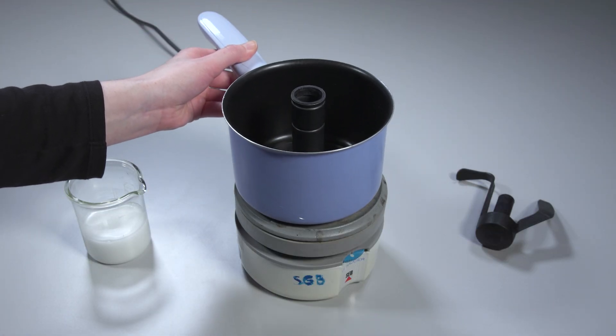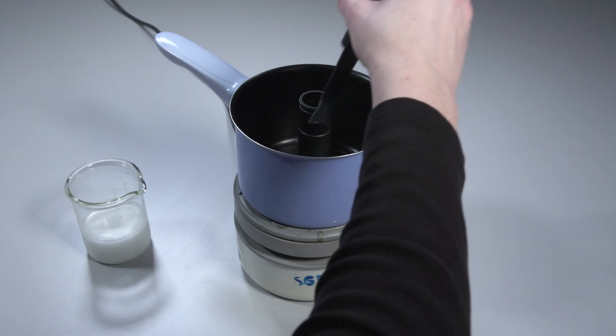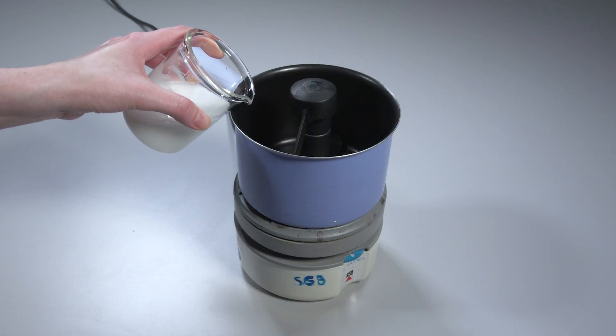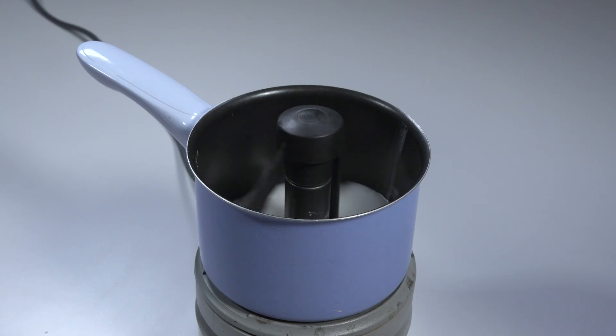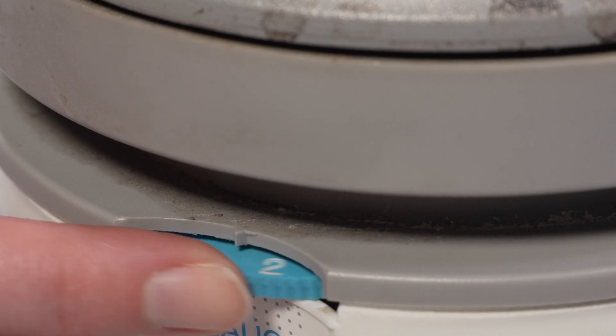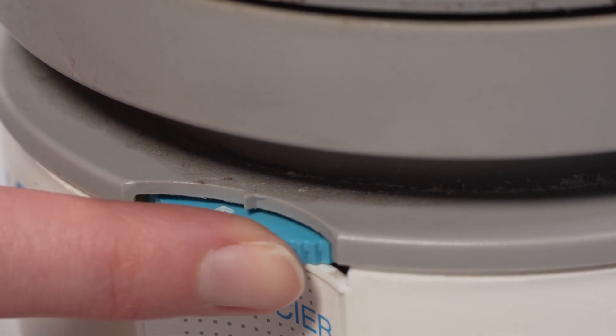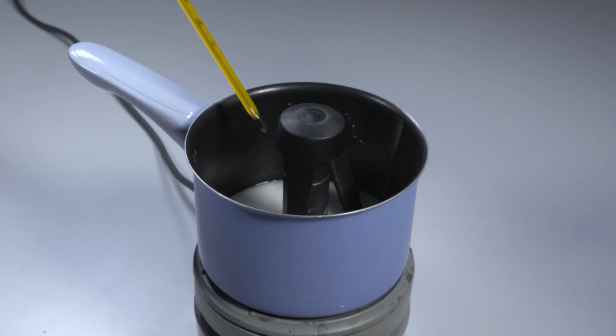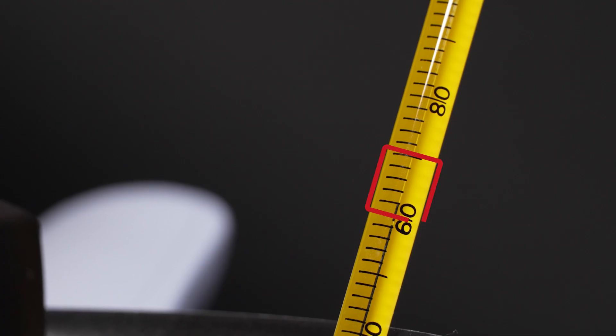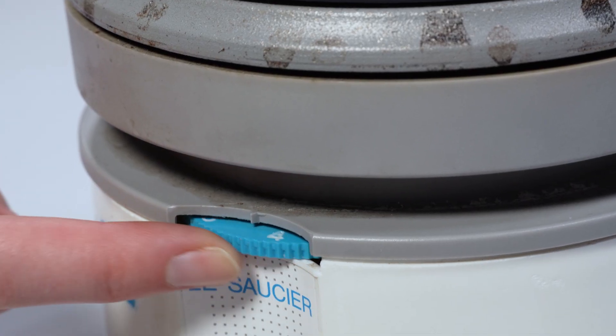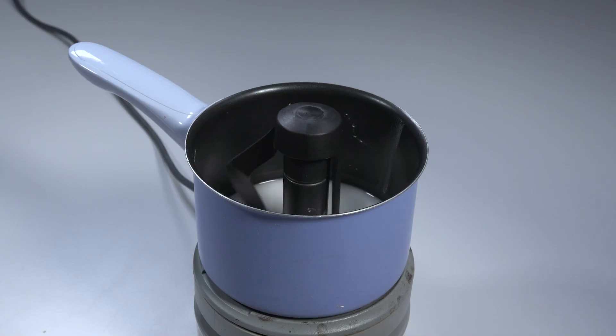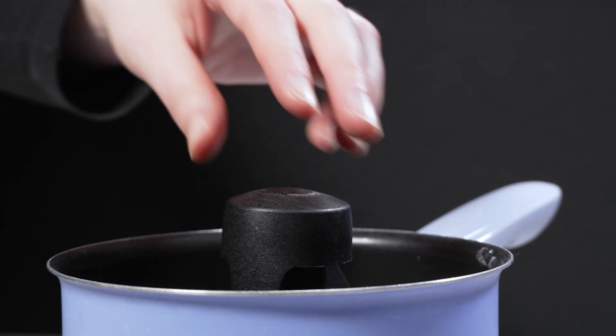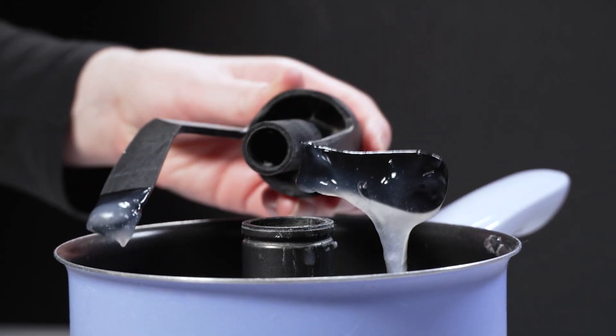First, the stirring attachment is inserted. The starch suspension is added to the saucepan. The suspension is then stirred for 30 minutes at a temperature between 60 degrees Celsius and 70 degrees Celsius. The temperature range 5 of this sauce maker corresponds to 65 degrees Celsius. A thermometer can be used to check the temperature of the suspension. After 30 minutes, the temperature is set to a lower range and stirred for approximately 10 more minutes. Once the paste is ready, the stirring attachment is removed and the paste is transferred to a container.